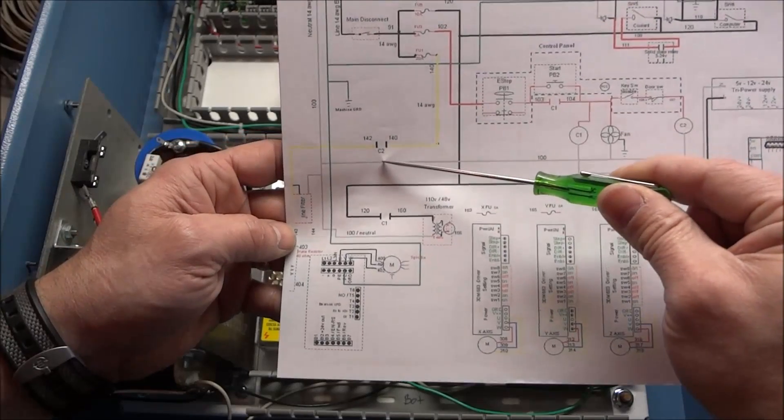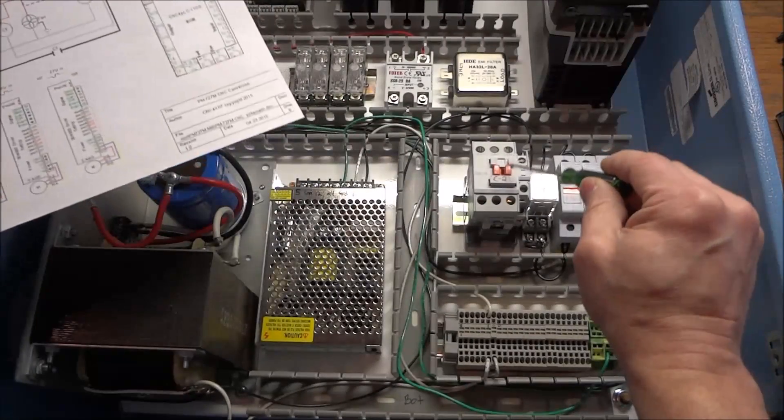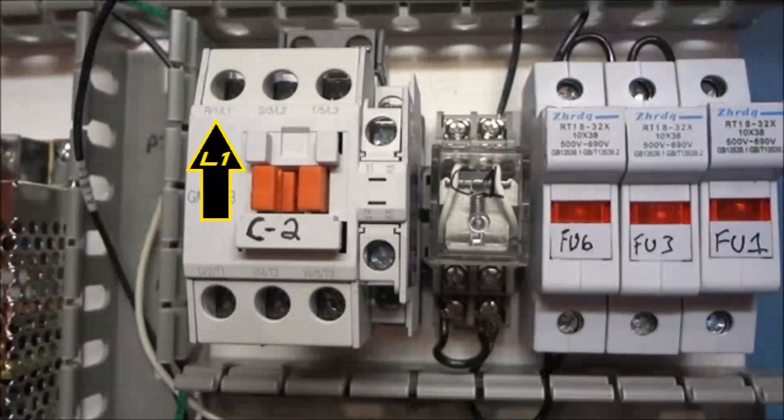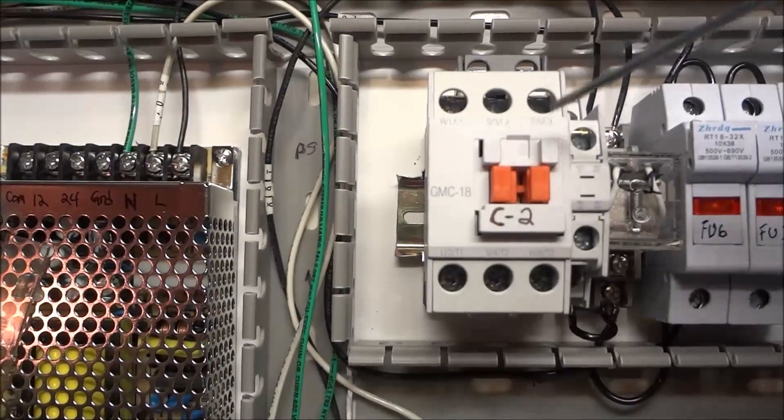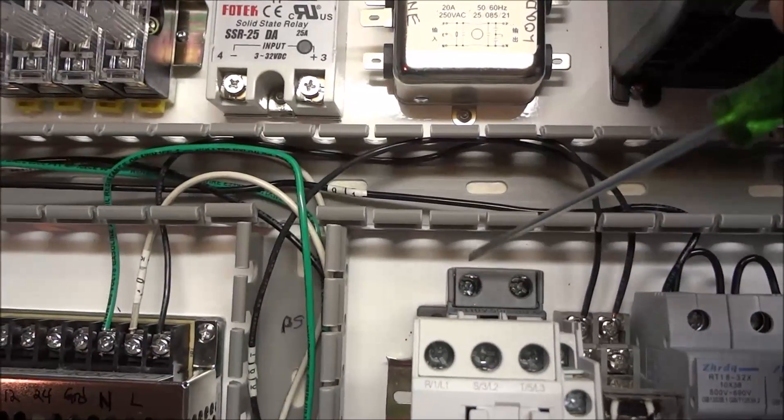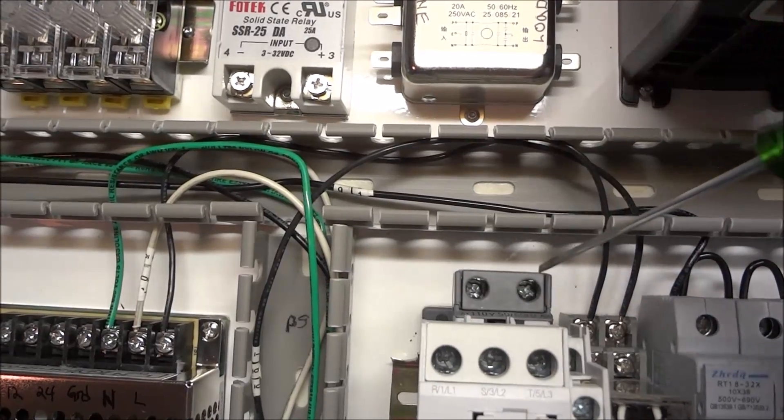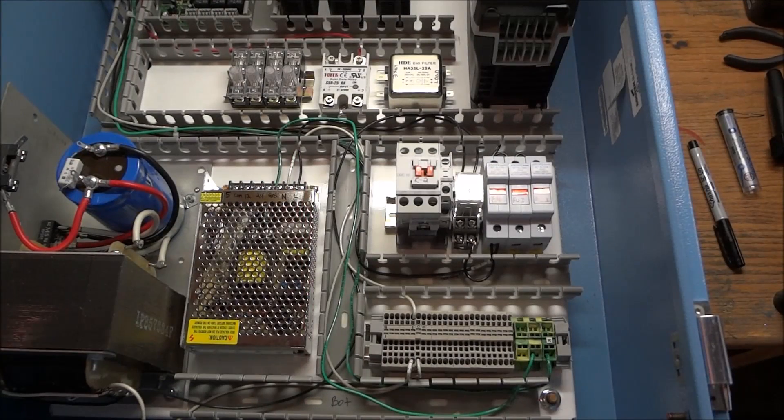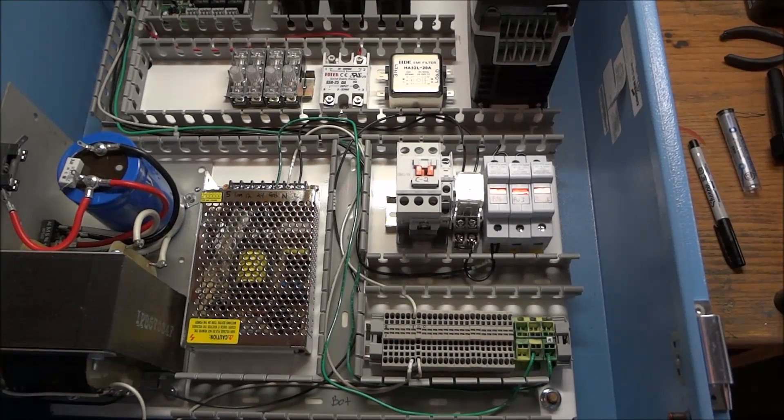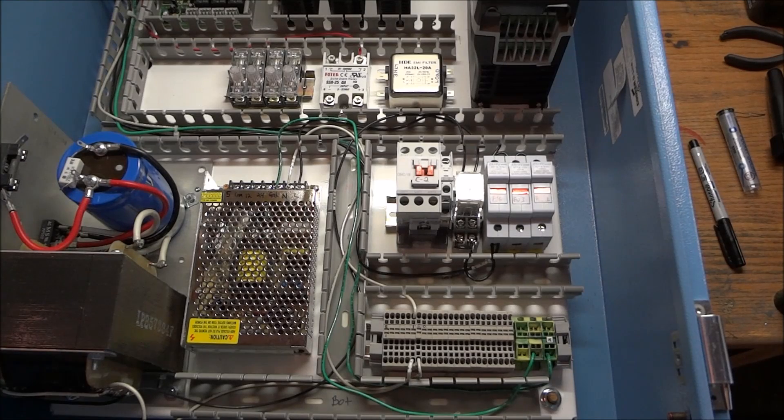Now this is the C2 contactor, the big contactor. And we're going to bring power in L1 and out through L2. We have three sets of contacts here. And over here, these gray connectors, that is our power to our coil for C2. So we want to come out of our fuse 1 using 14 gauge here.